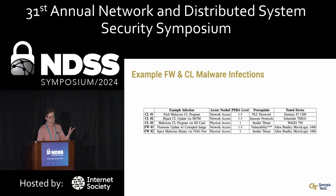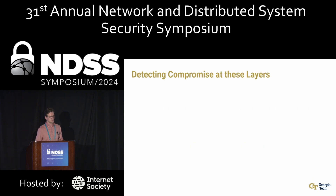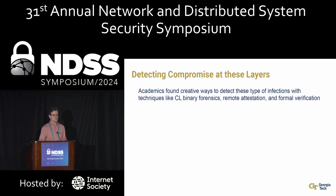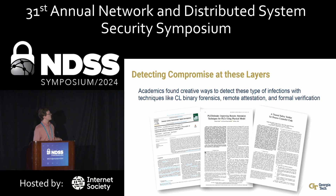How does this actually happen in practice? You can imagine pushing a malicious control logic program with a stolen password, or performing a man-in-the-middle attack. Generally, these infections require privileged access, compromised credentials, or some type of vulnerability. A vulnerability might reduce the prerequisites, but this is not the type of attack a casual adversary might try to pull off. Academics have found really cool ways to detect malware at these layers — things like control logic binary forensics, remote excitation, and formal verification.